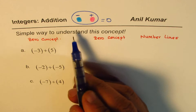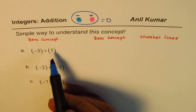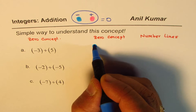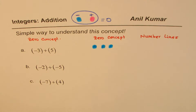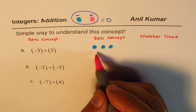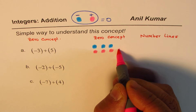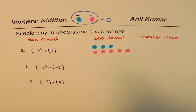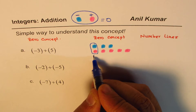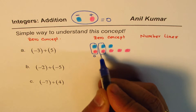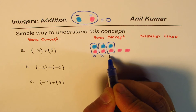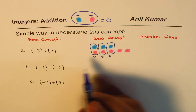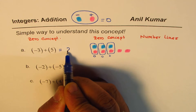We'll represent negative numbers with blue and positive numbers with red. Let's begin with the first example: minus three plus five. Minus three means three blues — one, two, three negatives. Plus five means five positives — one, two, three, four, five. Applying the zero concept, positive plus negative cancels out, and what remains is two, which is positive. So minus three plus five equals two.